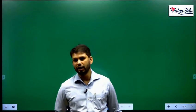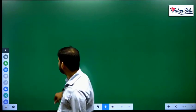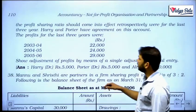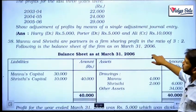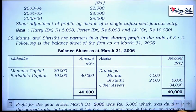Hi everyone, welcome back. Let us start question number 38 now. Question number 38 is asking us that Manu and Srishti are partners in a firm sharing profits in the ratio of 3 to 2.